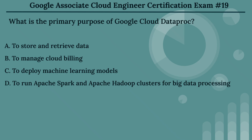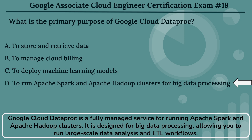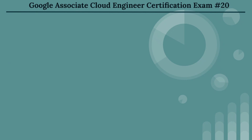The right answer is Option D: to run Apache Spark and Apache Hadoop clusters for big data processing. Google Cloud Dataproc is a fully managed service for running Apache Spark and Apache Hadoop clusters. It is designed for big data processing, allowing you to run large-scale data analysis and ETL workflows.